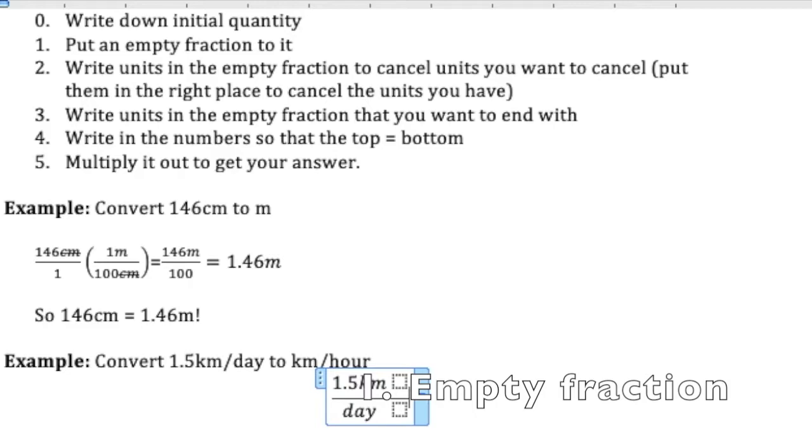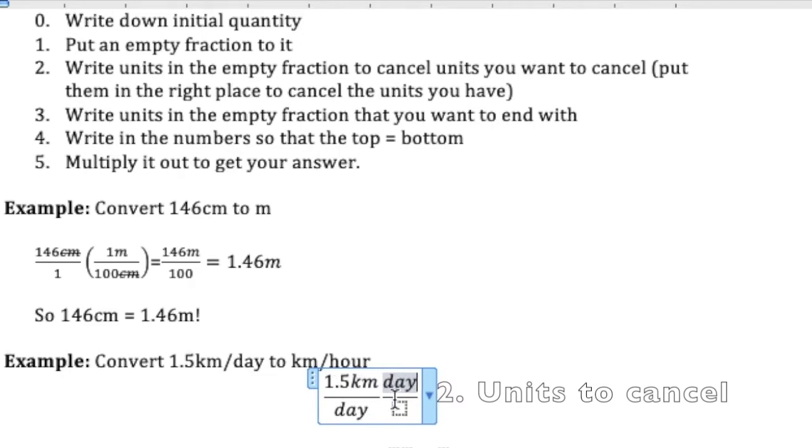And then what are the units I want to cancel? I want to cancel the days. So I'm going to put days on the top of my empty fraction to cancel the days that started on the bottom. And then on the bottom, I'm going to put hours because those are the units that I want to end with.